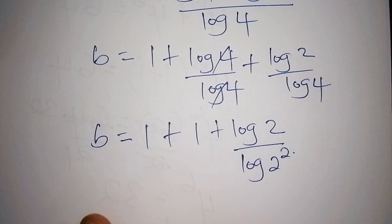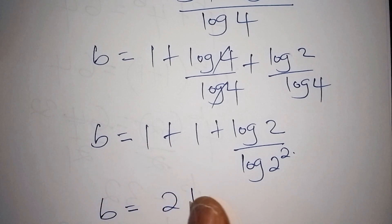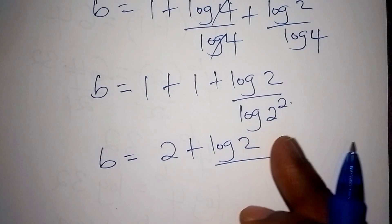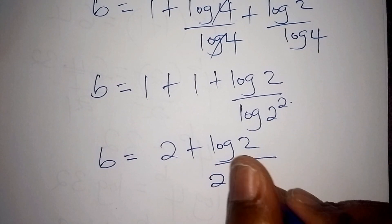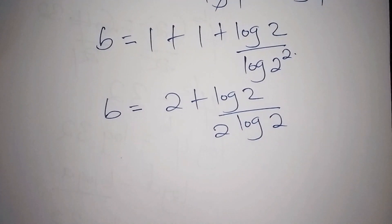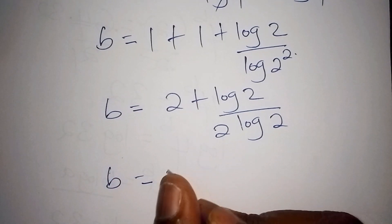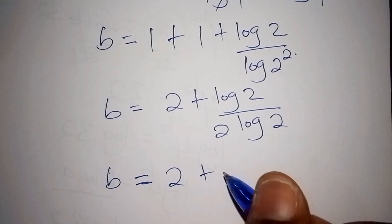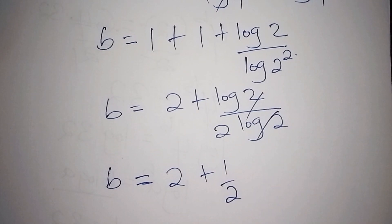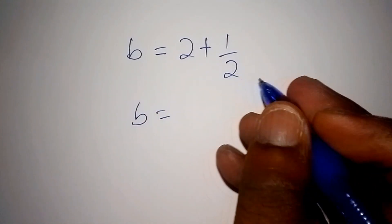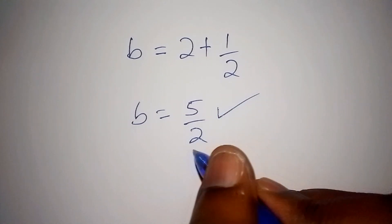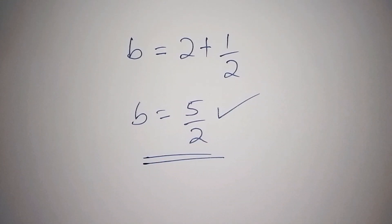So b equals 1 plus 1 is 2, plus log 2 all over 2 log 2. The log 2 and log 2 cancel, giving us 1 half. So b equals 2 plus 1 half, which is 5 over 2. If you found your answer as 5 over 2, you did it well and you got the correct answer.